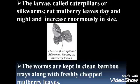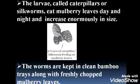The larvae called caterpillars or silkworms eat mulberry leaves day and night and increase enormously in size. The food of silkworms is mulberry leaves. The larvae — called caterpillars or silkworms — eat mulberry leaves day and night and also increase enormously in size.